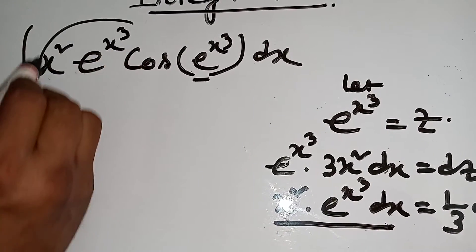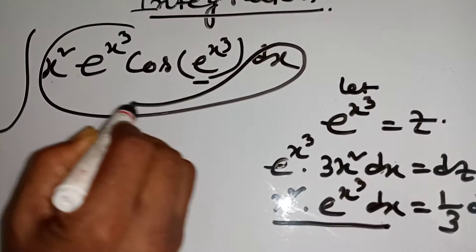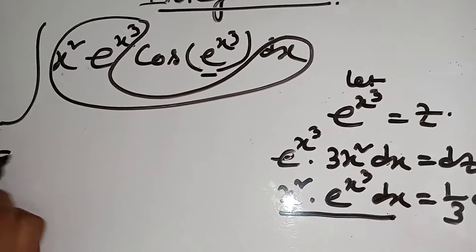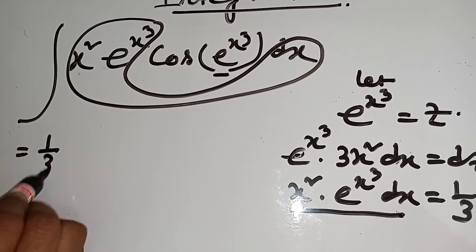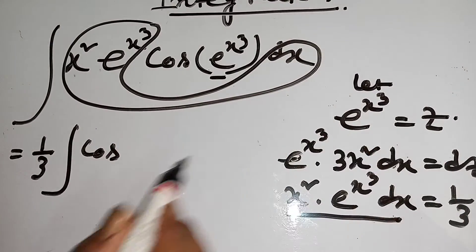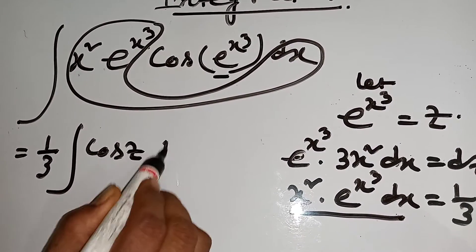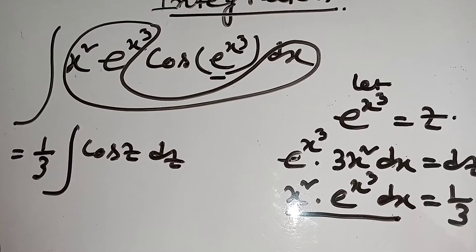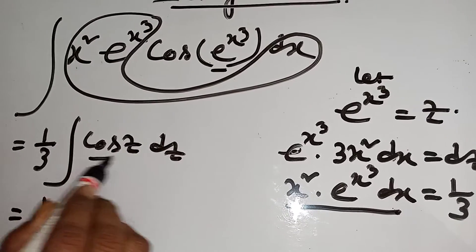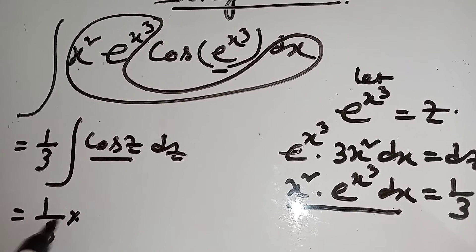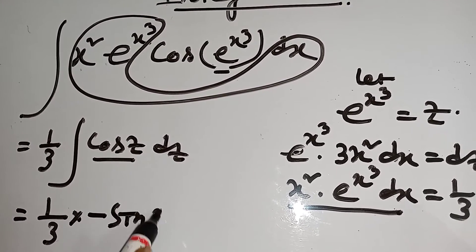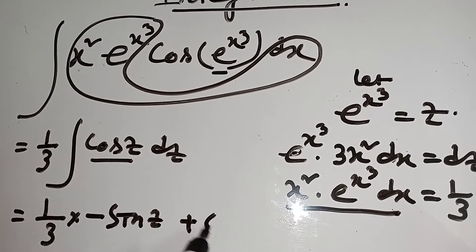Now put this value — the value of this equal to one third dz. That means 1 by 3 integration cos, and at this, z equals z dz. Now integration cos z equal to minus sin z plus c.